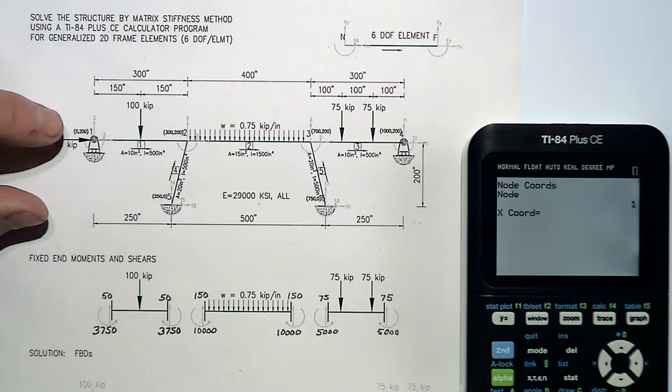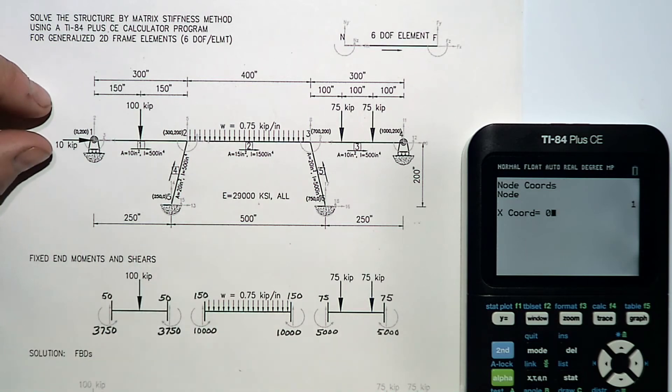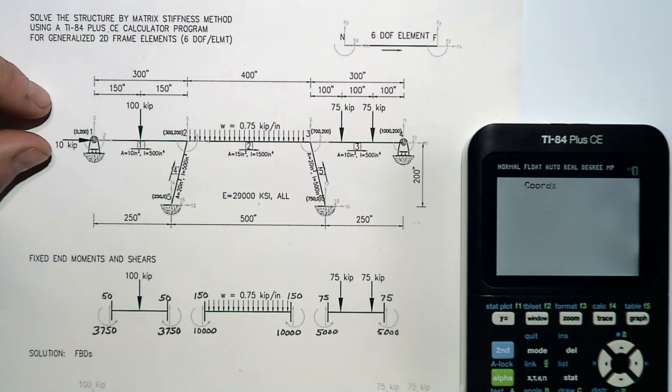Now, coordinates for each node. Node one is at zero, two hundred. Node two at three hundred, two hundred. Node three at seven hundred, two hundred. Node four at one thousand, two hundred. Node five is at two fifty, zero. Node six is at seven fifty, zero.